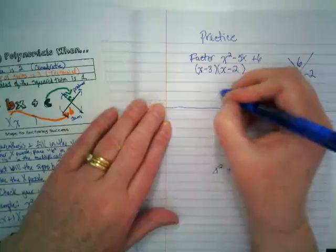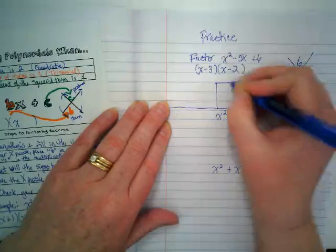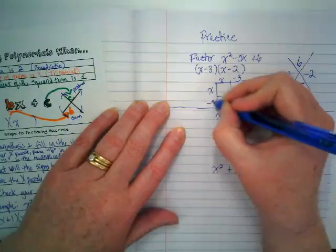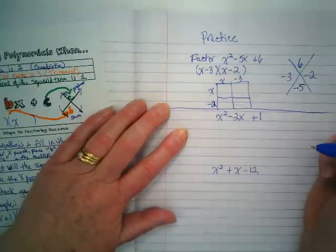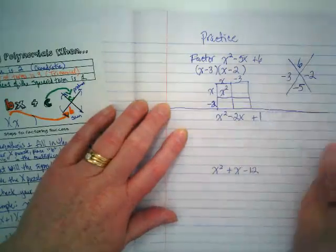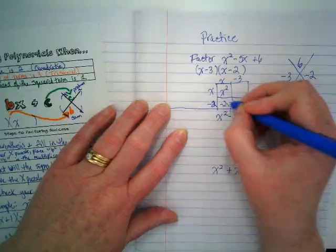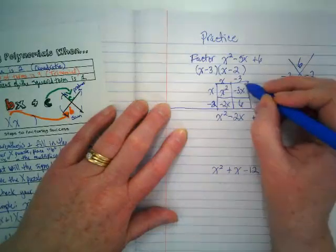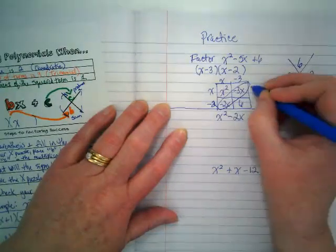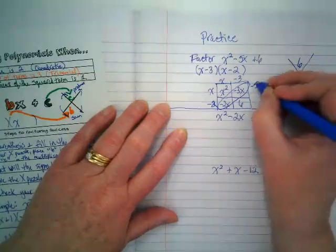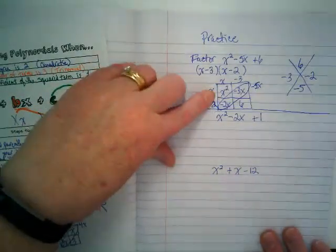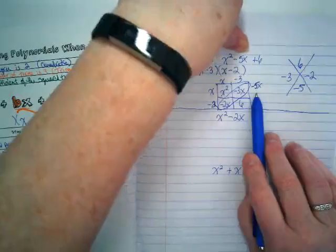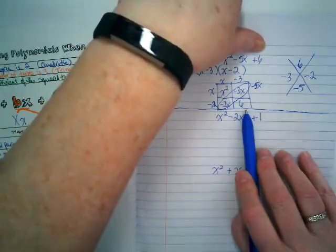x - 3, x - 2. And I get x², -2x, -3x, and six. Combine my like terms and I get -5x. So my first box is the first term, doesn't match? My combined like terms is our center term, doesn't match? And then the final is here. So that's how we check.